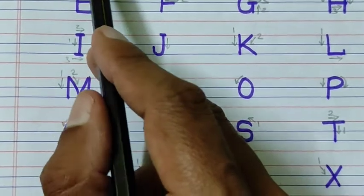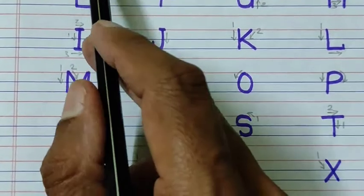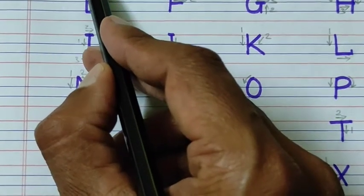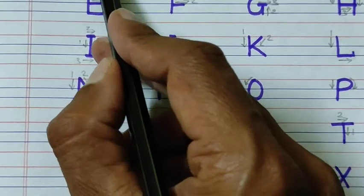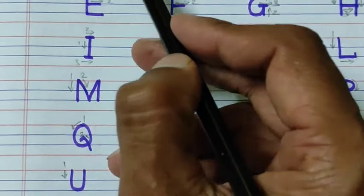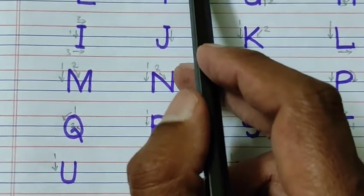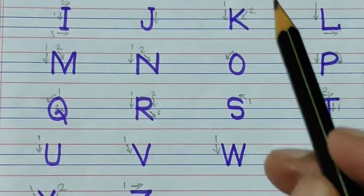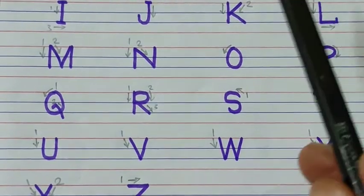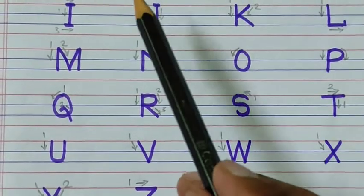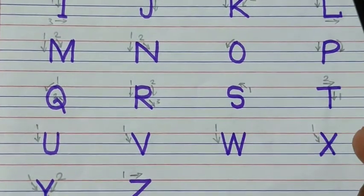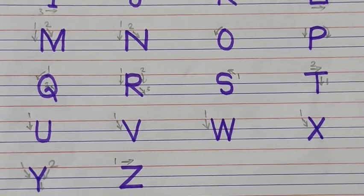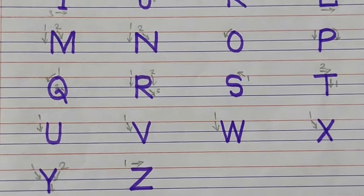For capital letters, the first three lines are used. When writing, you start from the top line, go down to the middle line. In this way, each letter is clearly shown - which line to start from and how to write it. In these four lines, I have shown you how to write capital letters. From A to Z, learn to write these letters in this manner.